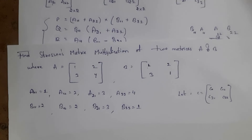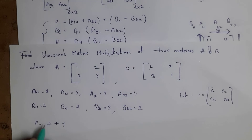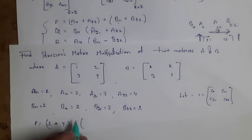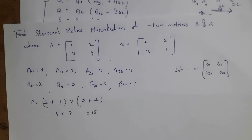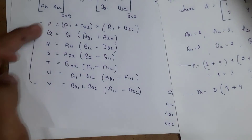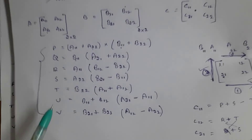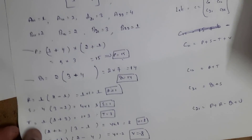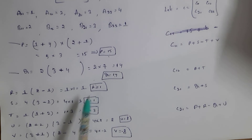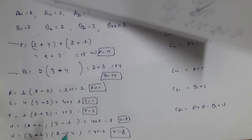First we find P = (a11 + a22) × (b11 + b22) = (1 + 4) × (2 + 1) = 5 × 3 = 15. Then we find all remaining values using the formulas. The results are: P = 15, Q = 14, R = 1, S = 1, T = 3, U = 8, V = −8.